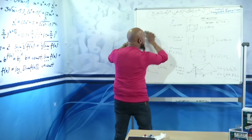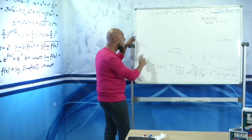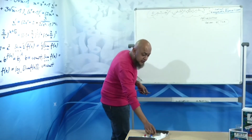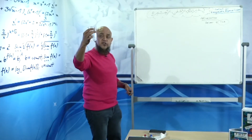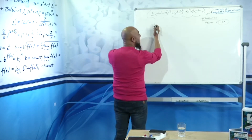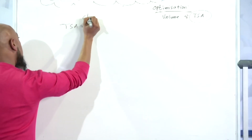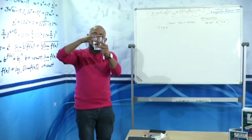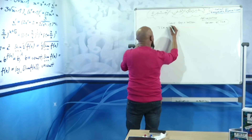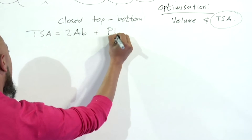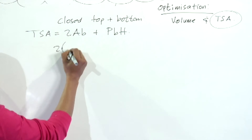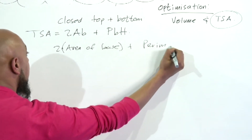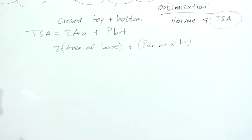Welcome to K-Way — we're going to give you one formula you can use for all your shapes. Total surface area for a closed top and bottom: looking at this tumbler, if this cylinder was closed on the top and closed at the bottom, the formula is: total surface area equals two times area of base plus perimeter of the base times your height.